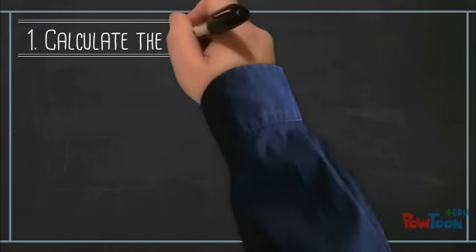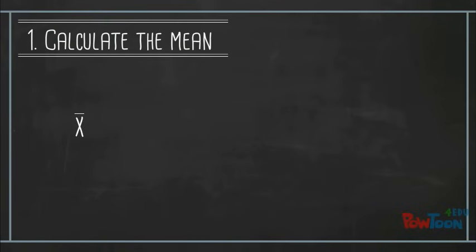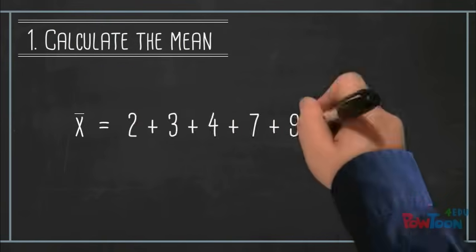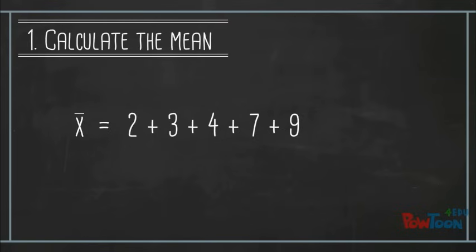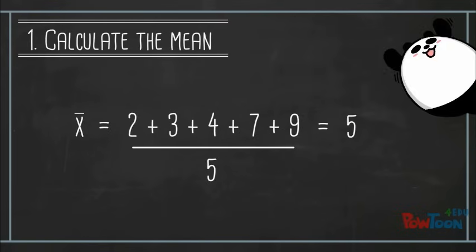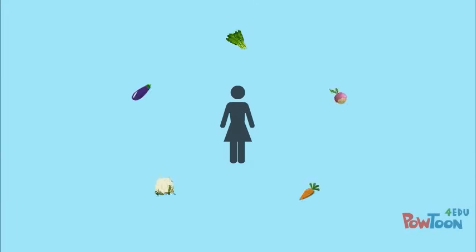To calculate the standard deviation, the first step is to calculate the mean of the data set, denoted by x with a line over it, also called x-bar. In this case, the mean would be 2 plus 3 plus 4 plus 7 plus 9 divided by 5, which equals 5. Our average friend has 5 vegetables in their fridge.